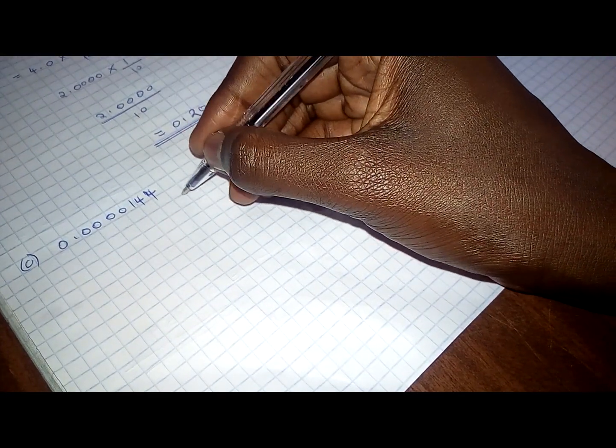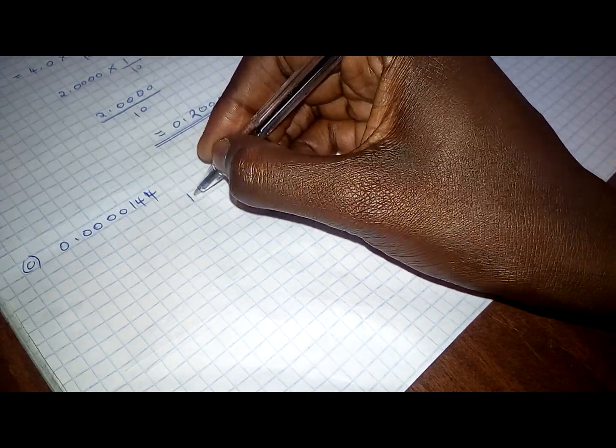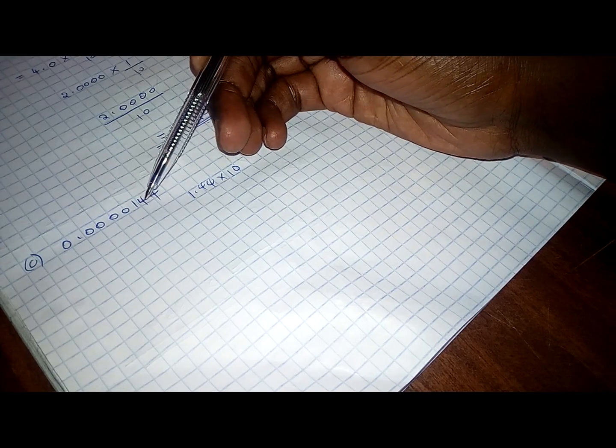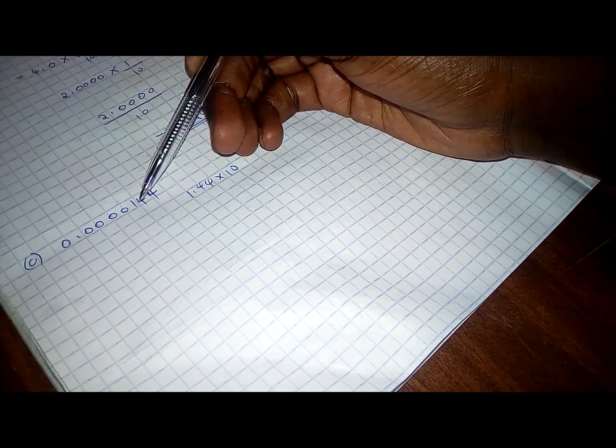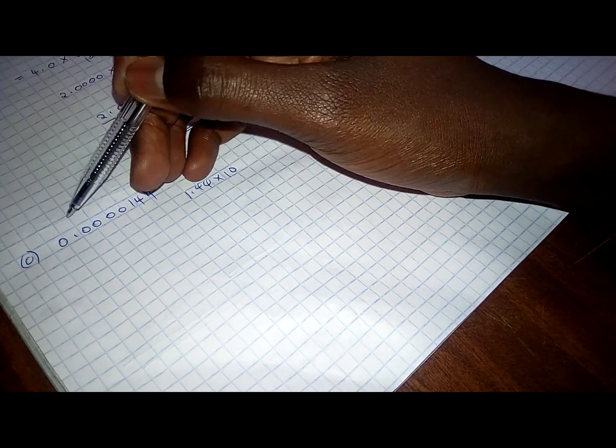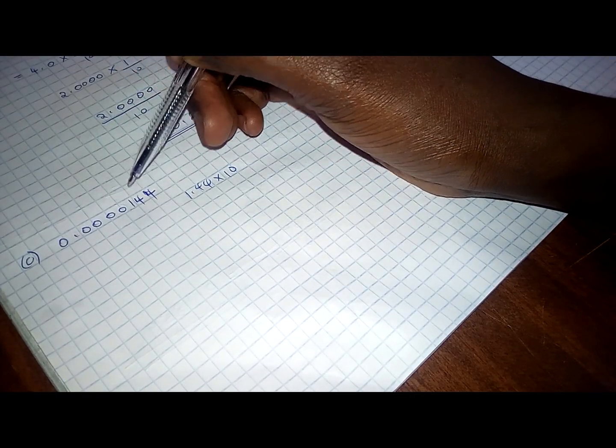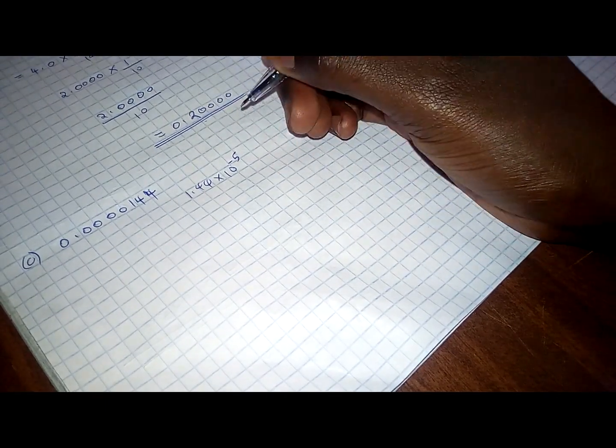So, we are going to either have 1.44 times 10. That is if you decide to put the decimal in between 1 and 4. So, that will be times 1, 2, 3, 4, 5 because it's from left to right. It's a negative.